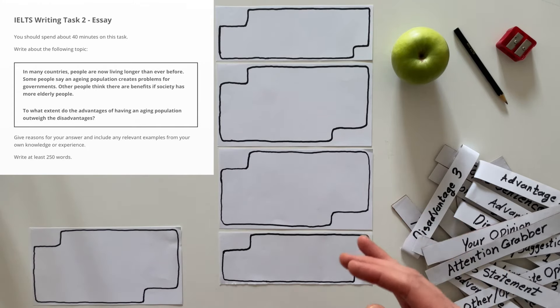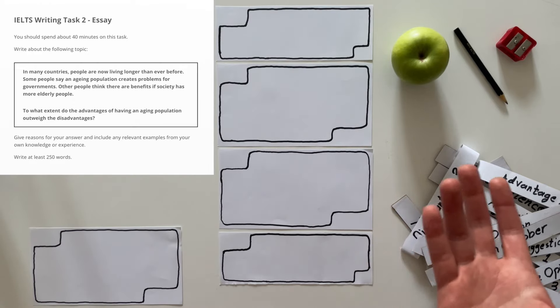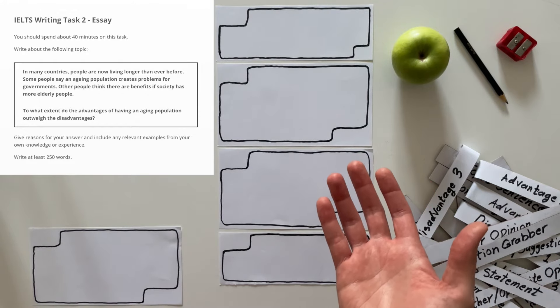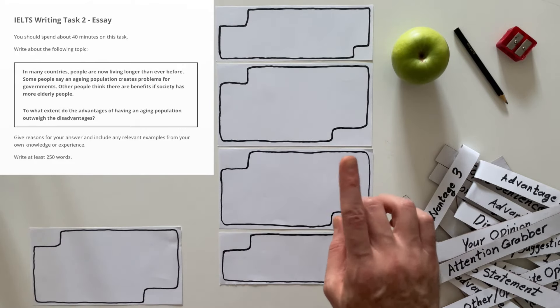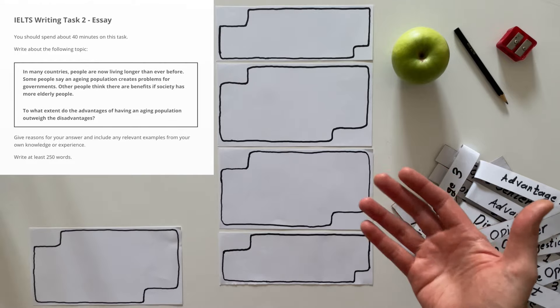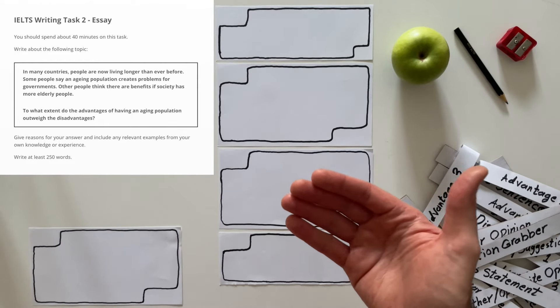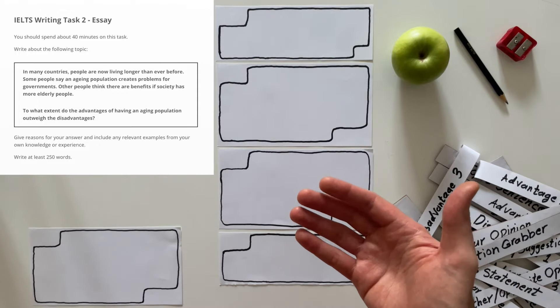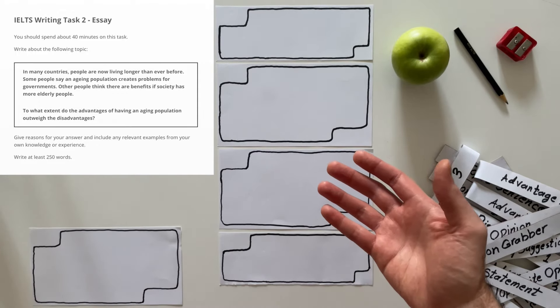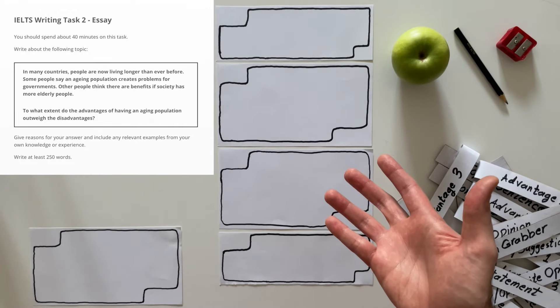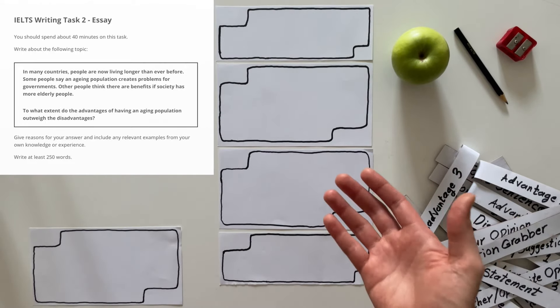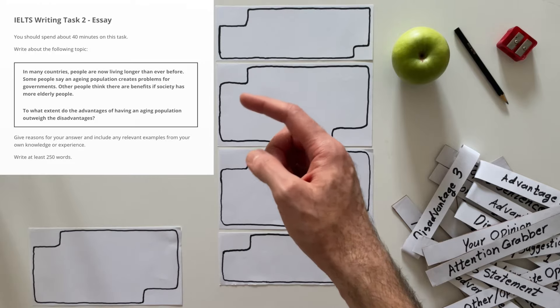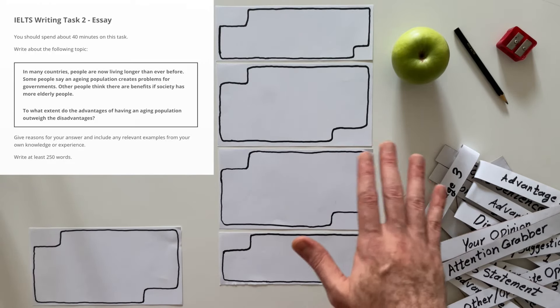Some people say, an aging population creates problems for governments. So, this is part of a fact. As you can see, IELTS writes it here and puts a full stop. I'm going to read it again. We need to understand how IELTS talks. Listen to this. Some people say, an aging population creates problems for governments. From the IELTS' perspective, this is fact. Old people create problems for governments. This is the fact that IELTS wants us to understand. We cannot dispute it here.